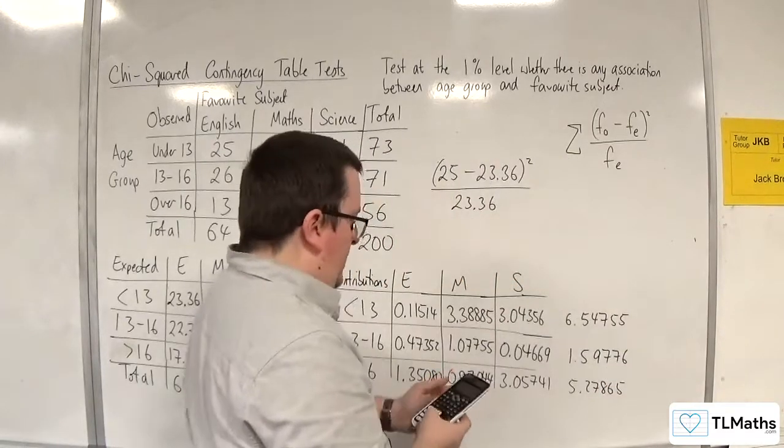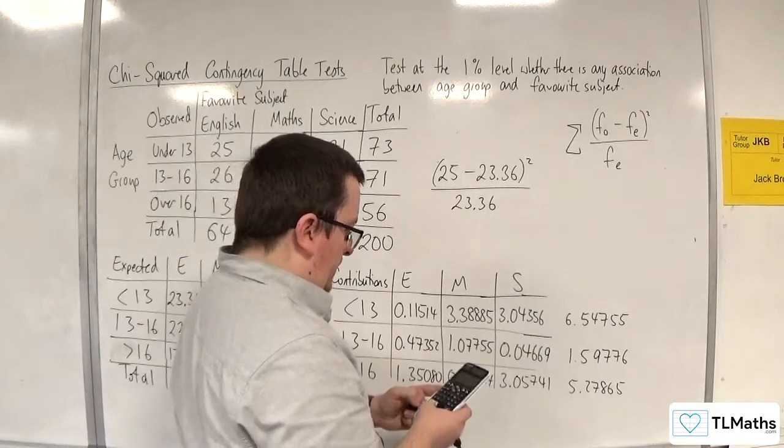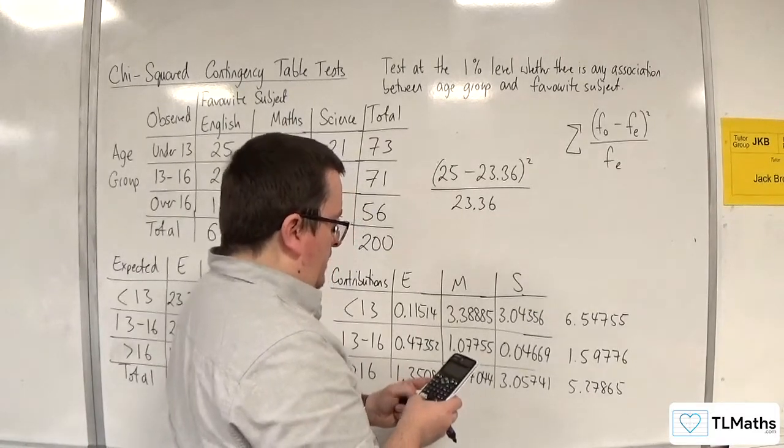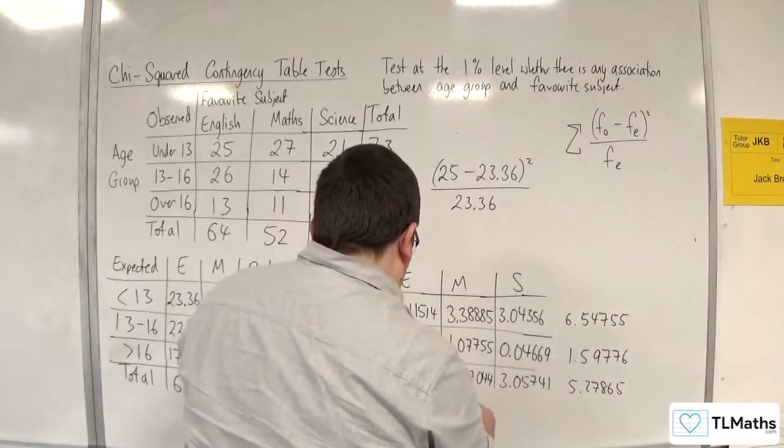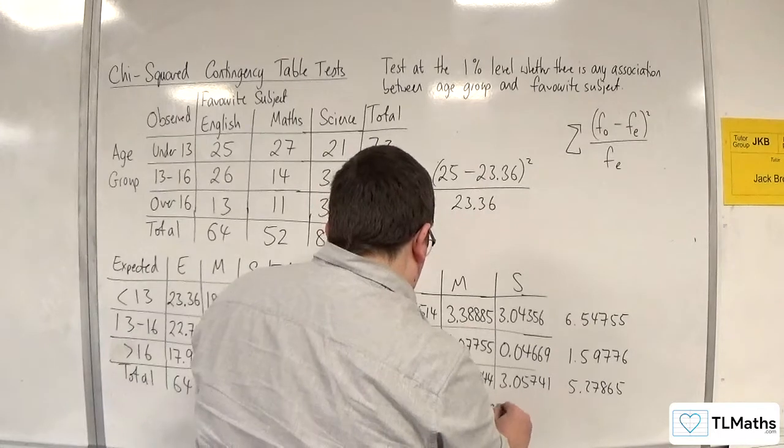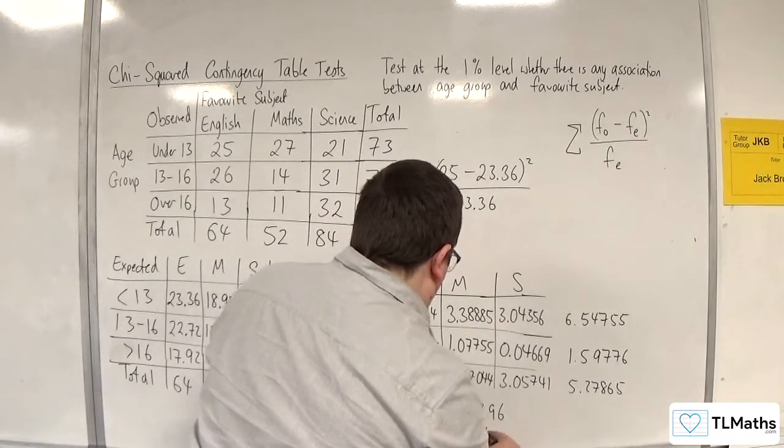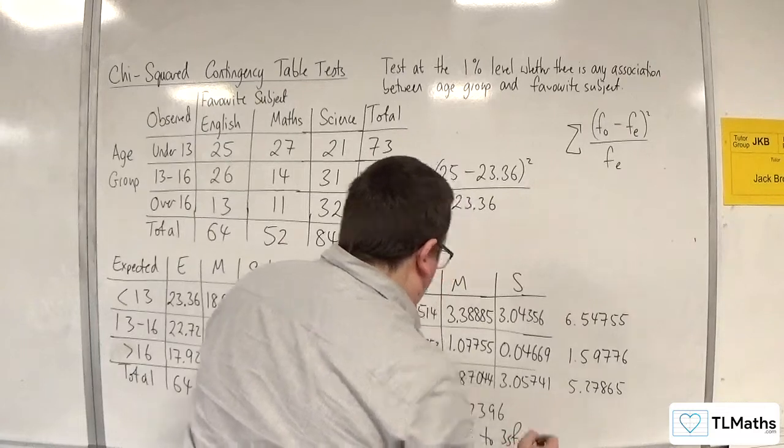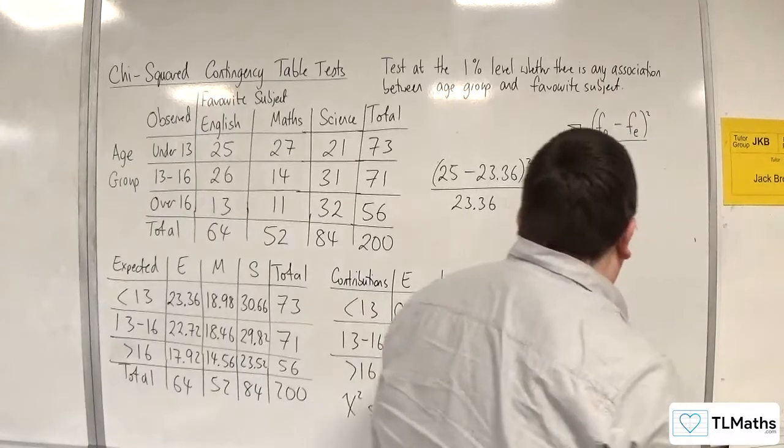Now I add those three together. Right, I'm getting 13.42396. So let's write that as 13.4 to 3 sig fig. Right, that's my chi-squared statistic.